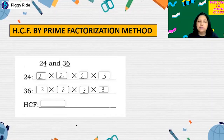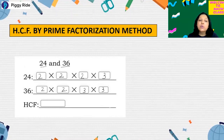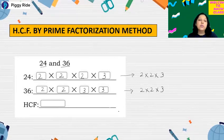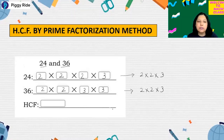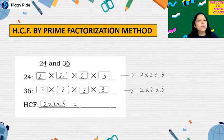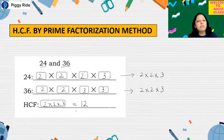Now check the common factors — it can be a product of common factors also. In 24 and 36, you can see which product is common. 2 into 3 is here in both. The common part is 2 into 2 into 3 in the factorization of 24, and 2 into 2 into 3 in the factorization of 36. So this product is common. Therefore HCF will be 2 into 2 into 3, and the HCF of 24 and 36 is 12.